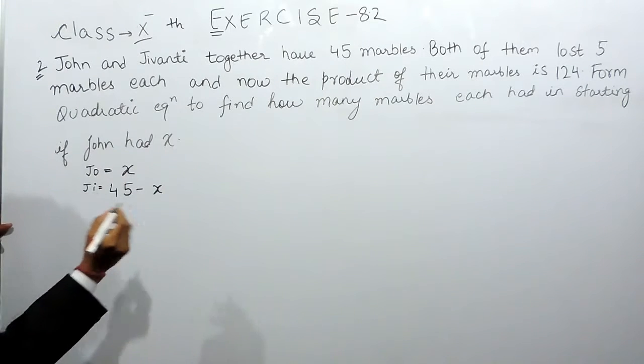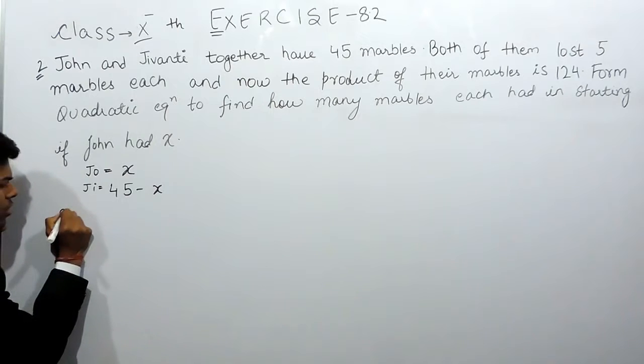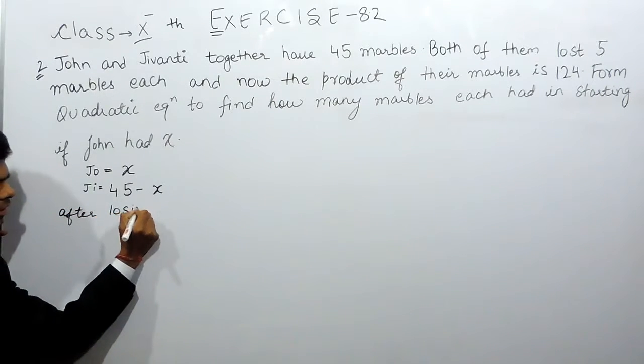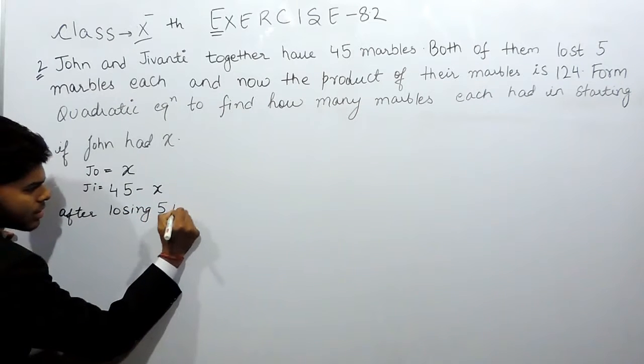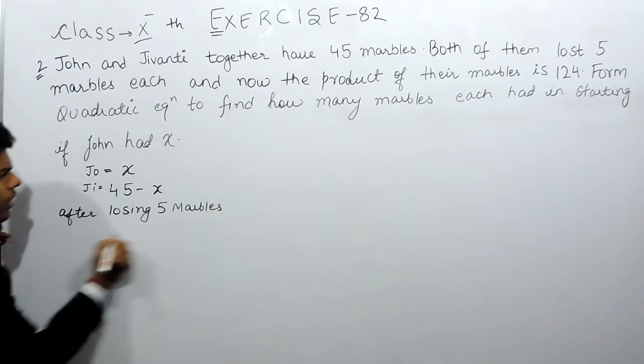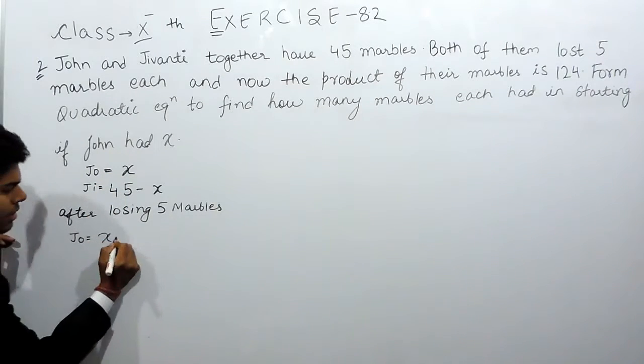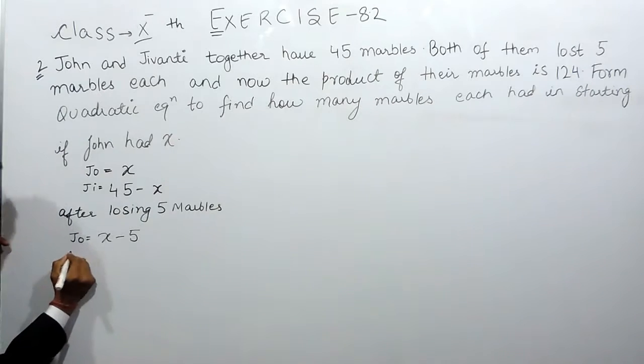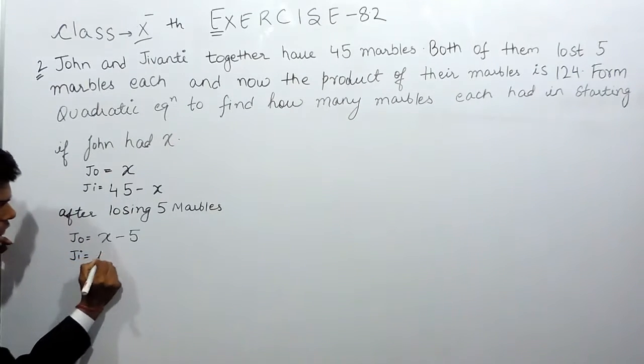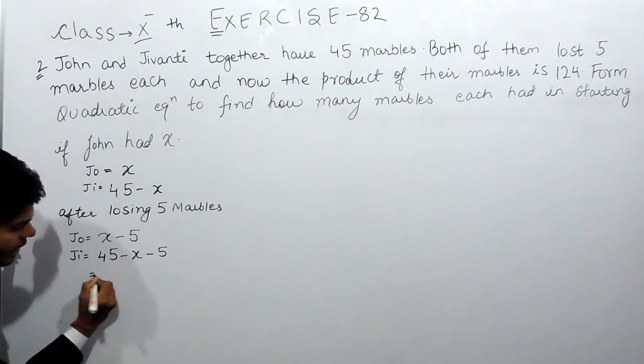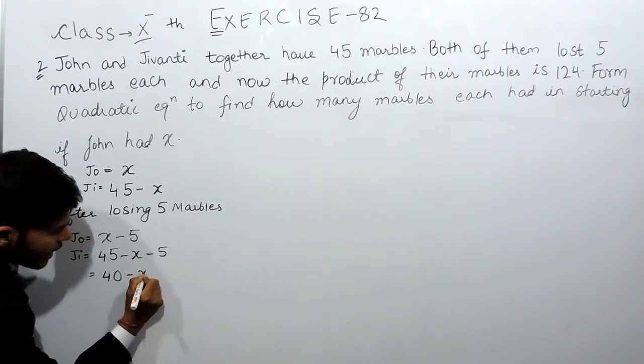Now both lost 5 marbles. After losing 5 marbles, John will have, earlier he was having x, so x minus 5 marbles and Jivanti will have 45 minus x minus 5 that is 40 minus x marbles.